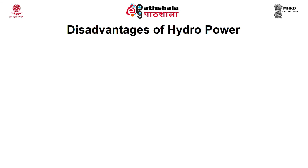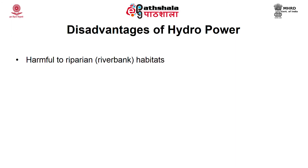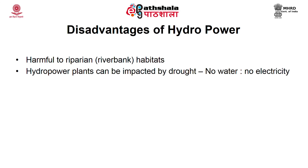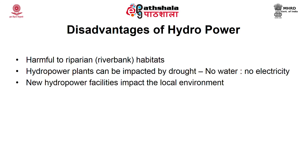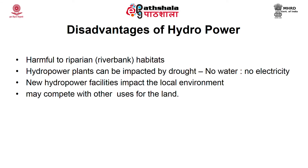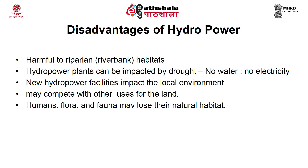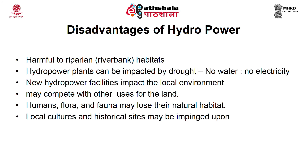The disadvantages of hydropower include harm to riparian (riverbank) habitats, and vulnerability to drought resulting in reduced or no electricity production. New hydropower facilities impact the local environment, compete with other land uses, displace human settlements, and destroy the habitats of flora and fauna. Local cultures and historical sites can also be damaged by hydropower projects.